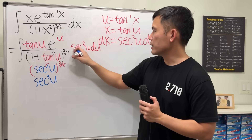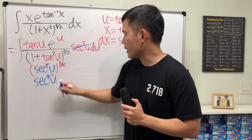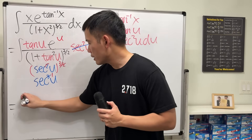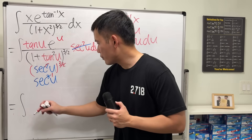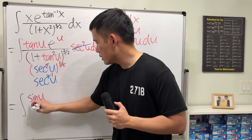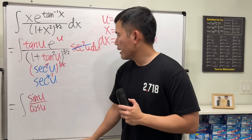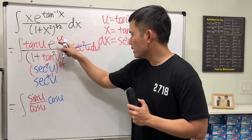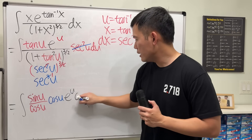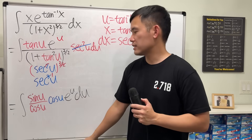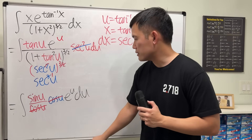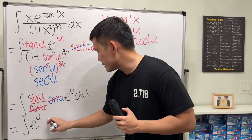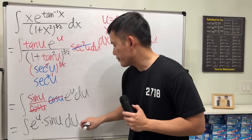We have secant squared on top, so we can cancel two of them, leaving just one secant. Now I'll write tangent as sine over cosine. The red part becomes sine u over cosine u, and then over secant u, which is the same as cosine u. The cosine u's cancel, leaving the standard integral: e to the u times sine u, du.